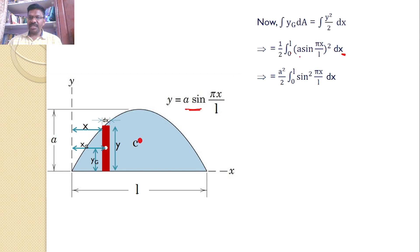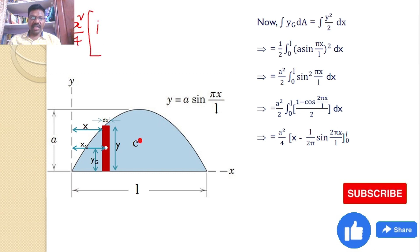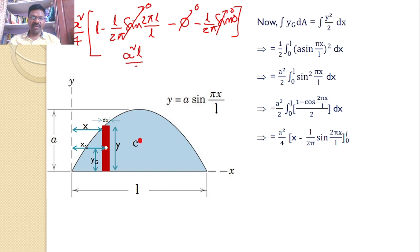Taking a²/2 outside, we integrate ∫₀ˡ sin²(πx/l)·dx. Using the identity sin²(θ) = (1 − cos2θ)/2, this becomes (a²/4)·∫₀ˡ [1 − cos(2πx/l)]·dx. Integrating: x − (l/2π)·sin(2πx/l), evaluated from 0 to l. Substituting l: l − (l/2π)·sin(2π) = l − 0 = l. Substituting 0 gives 0. Hence ∫yg·dA = a²l/4.